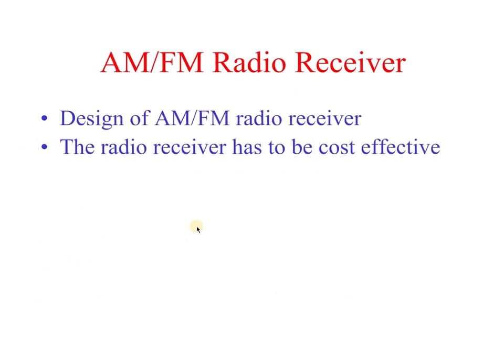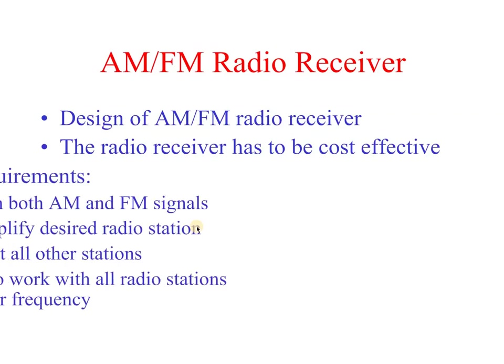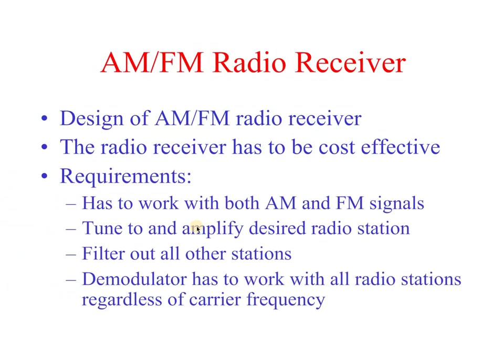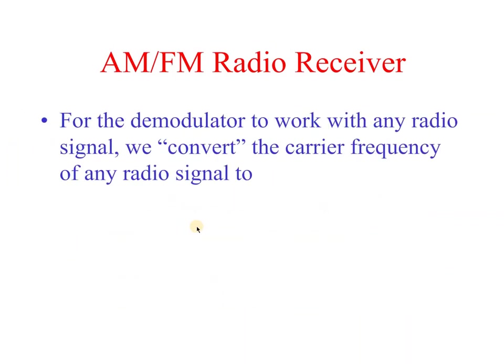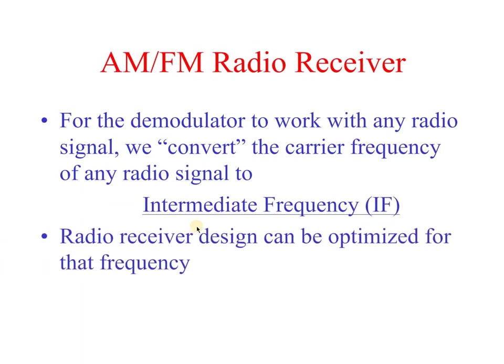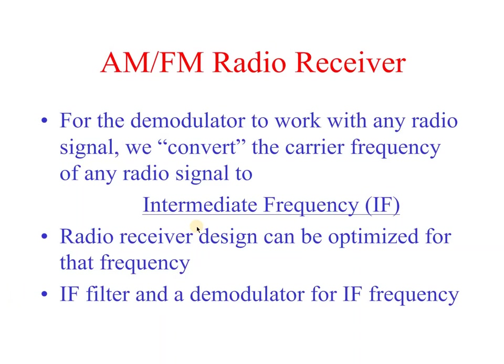The design of an AM/FM radio receiver requires it to be cost-effective. It must work with both AM and FM signals, tune to and amplify the desired radio station, and filter out all other stations. The demodulator has to work with all radio stations regardless of carrier frequency. To achieve this, we convert the carrier frequency of any radio signal into an intermediate frequency (IF), so the receiver can be optimized for that single IF frequency.